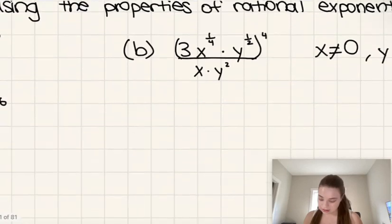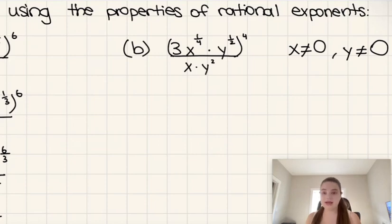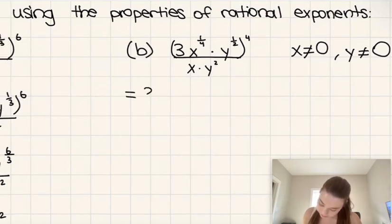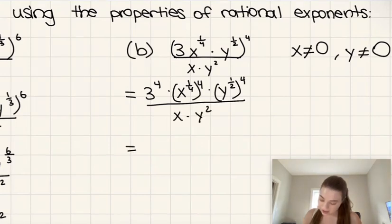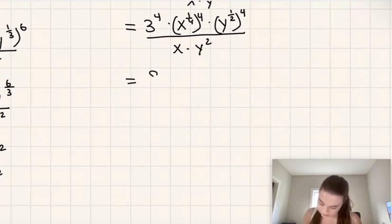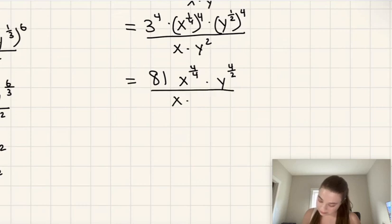Let's try B. It's pretty similar. First, I'm going to take all parts of the product to the power of 4. So we have 3 to the power of 4, times x to the power of one-fourth to the power of 4, times y to the power of one-half to the power of 4, all over x times y squared. Then 3 to the power of 4 is 81, x to the power of 4 over 4, and y to the power of 4 over 2, since we multiply those powers.